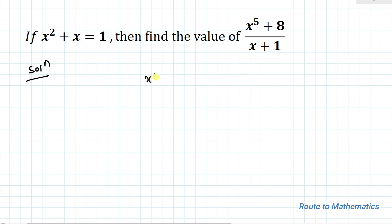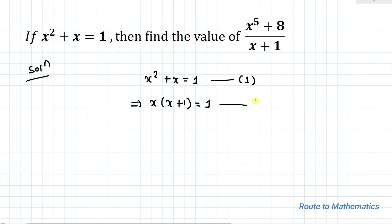We have given x² + x = 1 as equation 1. In the next step I can write x multiplied with (x + 1) equals 1, by taking x common — let's call this equation 2. We are asked to find the value of x⁵ + 8 divided by x + 1.